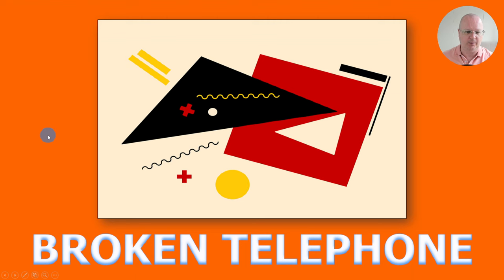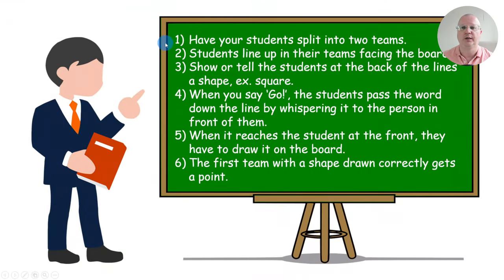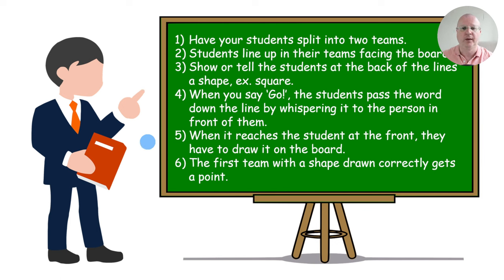Next is the game — a vocabulary game called Broken Telephone. Have your students split into two teams and line up facing the board. Show or tell the students at the back of the line a shape, for example, square. When you say go, they pass the word down the line by whispering it. When it reaches the student at the front, they draw it on the board or say it — whoever does it first gets a point.